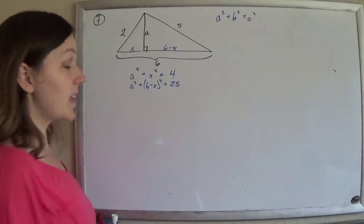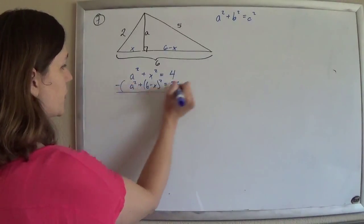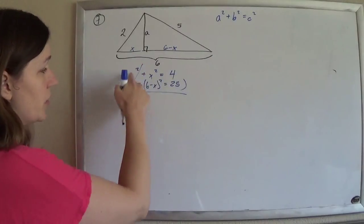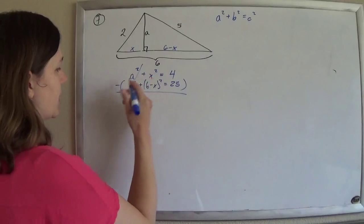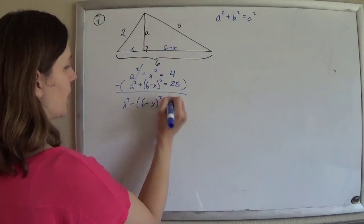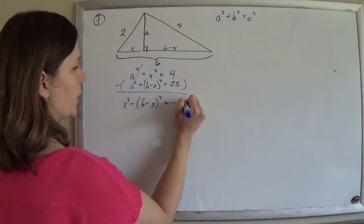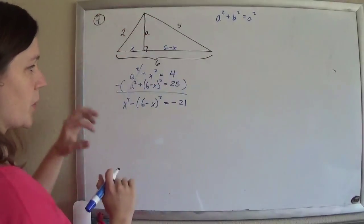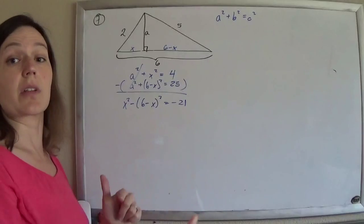Two equations, two unknowns, now I can solve. In fact, this is really nice. I can actually just subtract these two equations from each other. A little elimination, those a squareds actually go away. And then I'll just have x squared minus 6 minus x squared on the left, and 4 minus 25 is minus 21 on the right. You could also solve both of them for a squared and set them equal to each other. It works the same way. I think that's what the answer guide does.